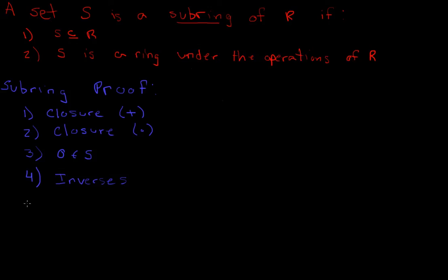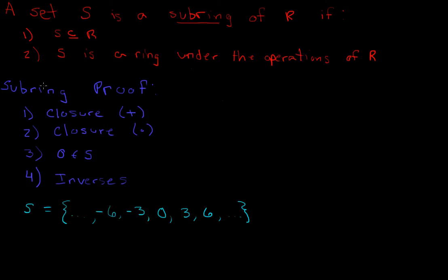For this video I'm going to show that the set S = {..., -6, -3, 0, 3, 6, ...} is a ring. Rather than actually going through and proving all of the eight steps of a ring, we can actually just show that this is a subring of the integers, since we already showed that the integers form a ring under normal addition and multiplication.